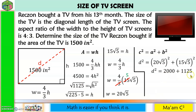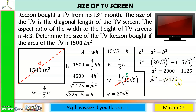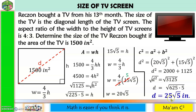2,000 plus 1,125 is 3,125. To solve for D, let us extract the square root on both sides — the index 2 and the exponent cancel out. 3,125 can be expressed as 625 times 5, and the square root of 625 is 25. So D equals 25 square root of 5. The square root of 5 is approximately 2.2, and 2.2 times 25 is 55. So 55 inches is the size of the TV Rekson bought with his 13-month pay.